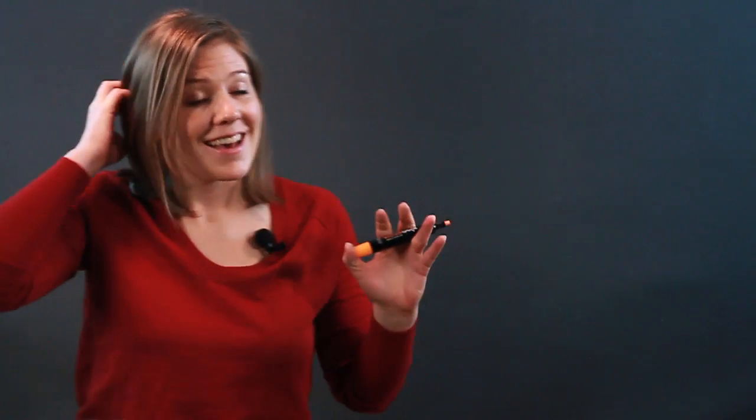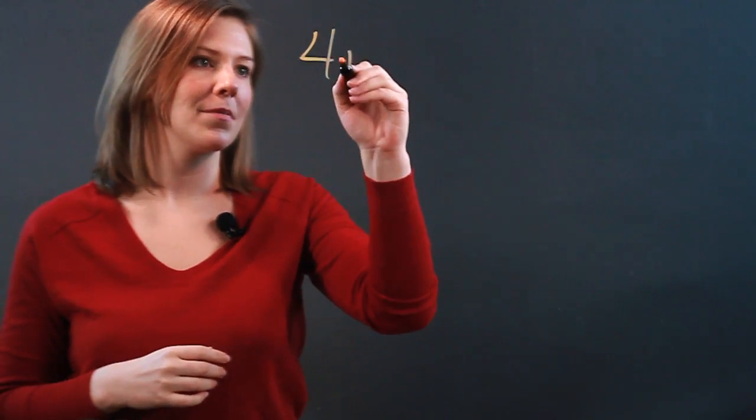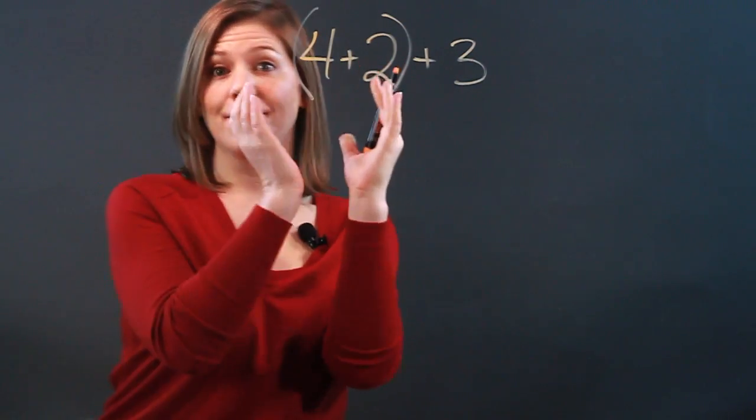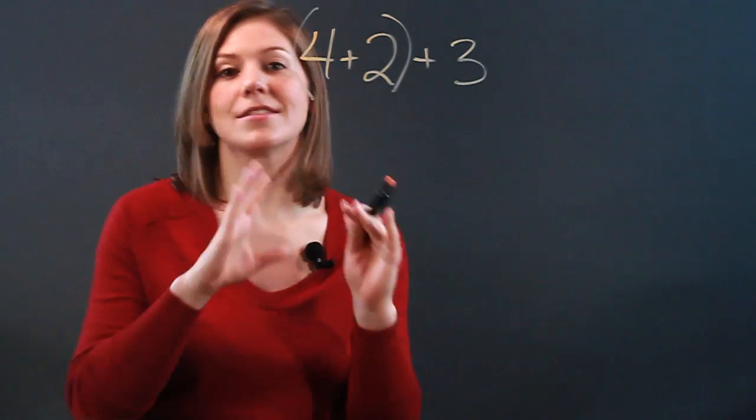Now, based on the associative property of mathematics, actually, the associative property of mathematics says that if you have 4 plus 2 plus 3, you could put this in parentheses and do that first. Anything in parentheses means do this first.